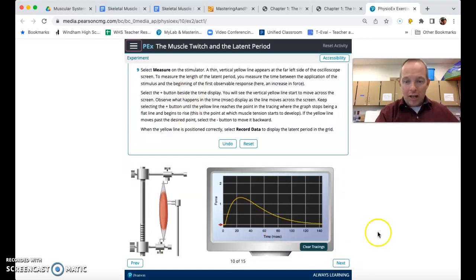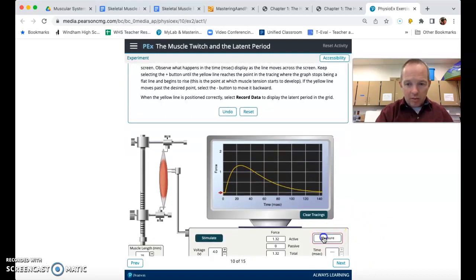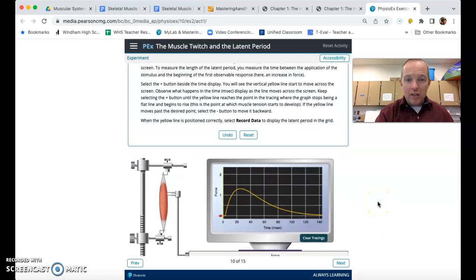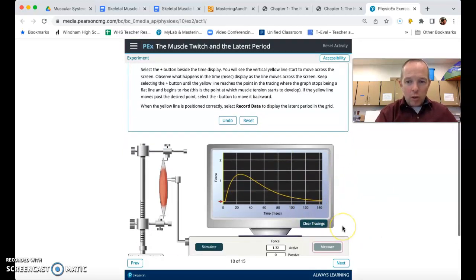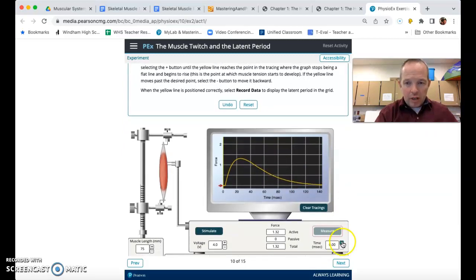And now we're going to measure how long that latent period actually is. So there's going to be a little yellow line here. And we can't see it right now because it's right up against that y-axis. But when I click on measure, and I'm going to go ahead and click on, and it's going to increase by 0.4 milliseconds each time. So now I'm at 1.2. We can start to see that yellow line show up on the screen.